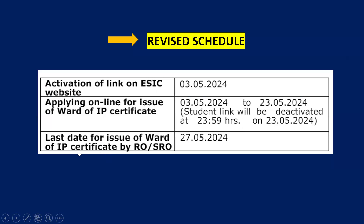The last date for issue of Ward of IP Certificate by RO and SRO — RO means Regional Office, SRO means Sub-Regional Office. The Ward of IP Certificates will be issued only by these two offices, on or before 27th May 2024. Students, please note these dates as they are very important.